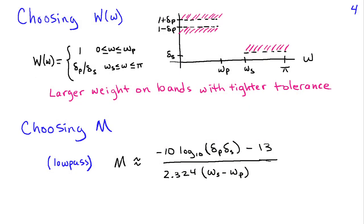The other factor that we have to choose in the design is the filter order M. We can't specify that exactly up front, but there are some approximations for low-pass filters such as the one I've indicated here, that if you choose an M approximately negative 10 log 10, the product of the ripple parameters minus 13 divided by 2.324 times the difference between the stop band and the pass band, in other words the transition bandwidth, this formula has been shown to work fairly well for coming up with an initial guideline for M.